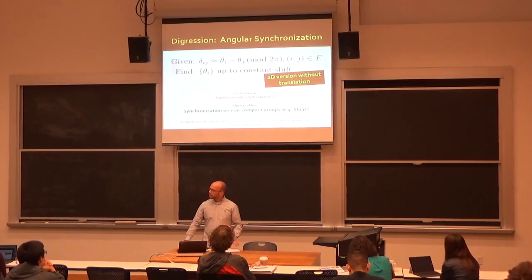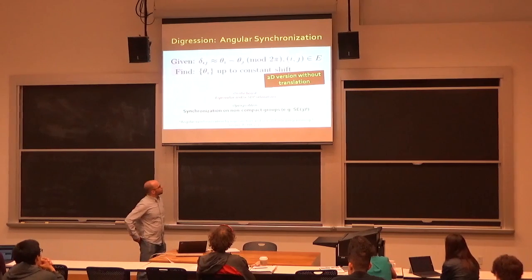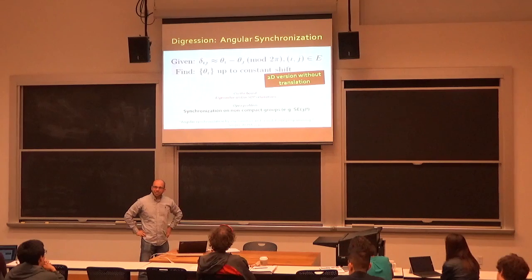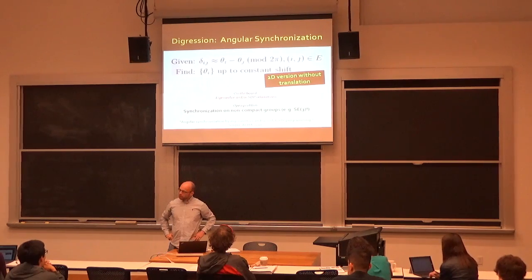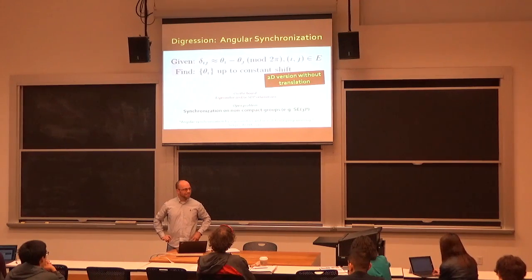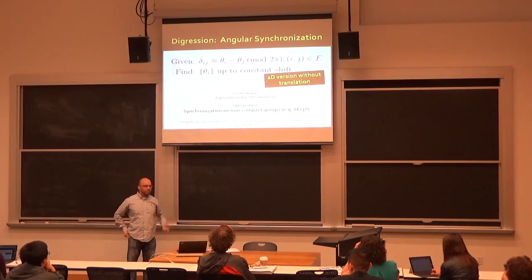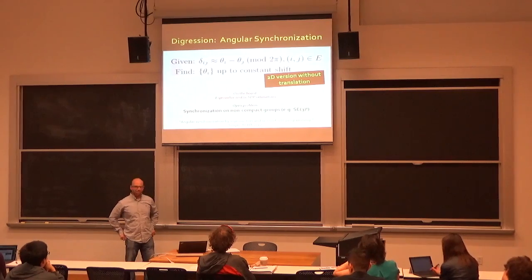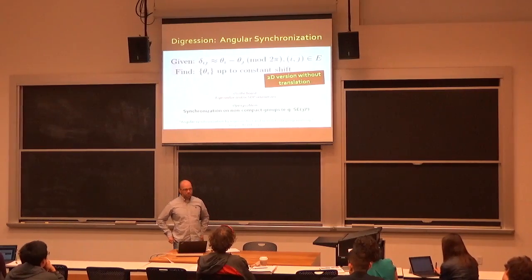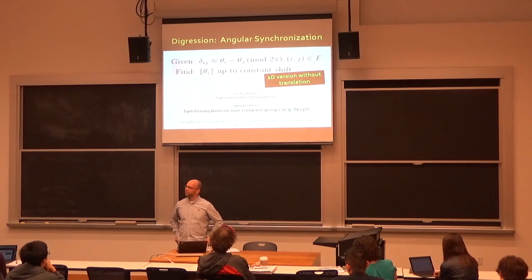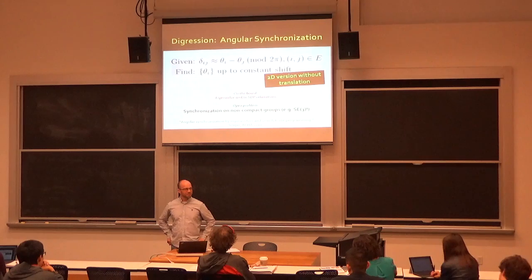We're not going to talk about the fully generic version of synchronization — pairwise rigid motions in 3D — because that's actually an open problem. There are heuristic approaches and people continue to study it, but the mathematical understanding is simply limited. There is a version that's much better understood: synchronization of two-dimensional rotations. Going from 2D to 3D is not super hard, but going from rotation to rotation plus translation ends up being really challenging.